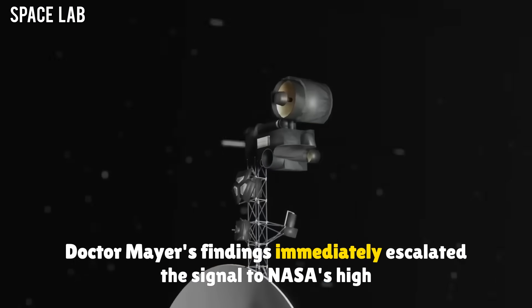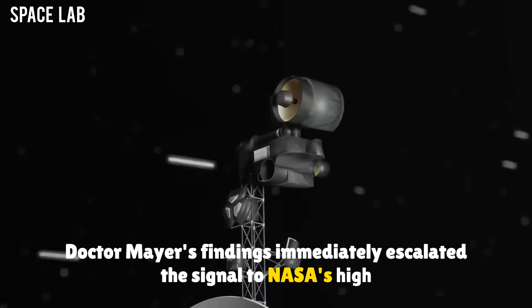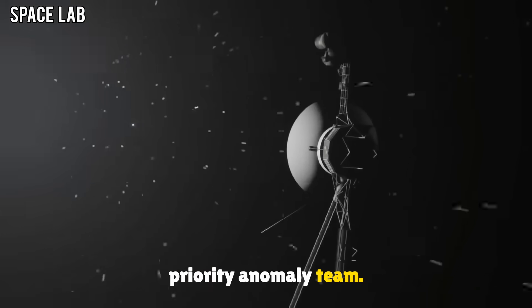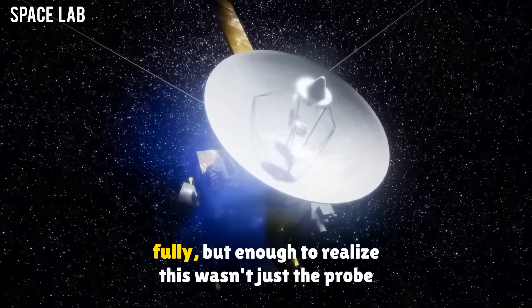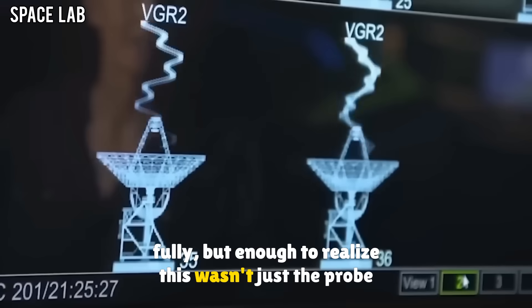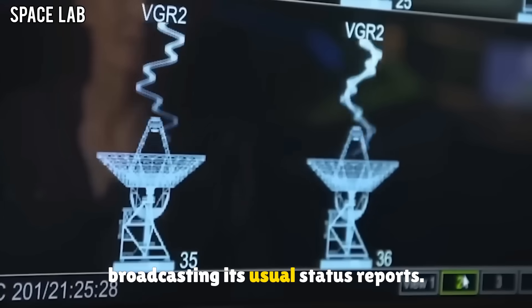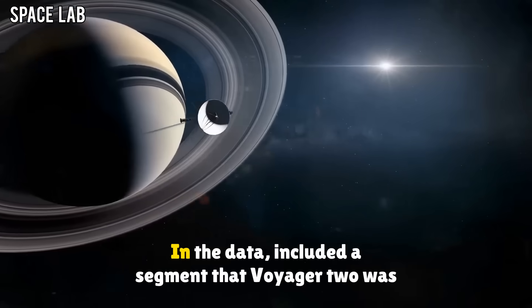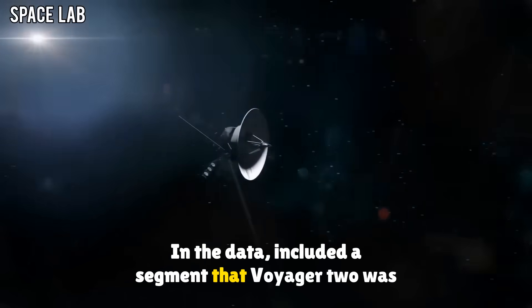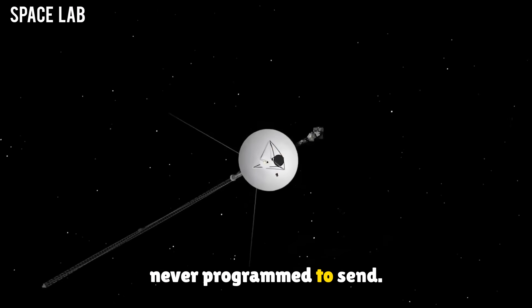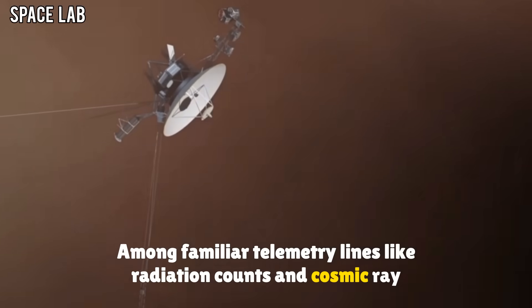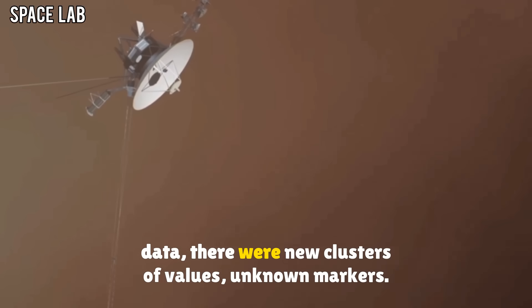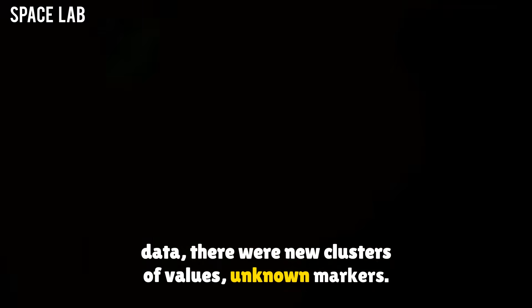Dr. Mayer's findings immediately escalated the signal to NASA's high-priority anomaly team. Within 48 hours, the signal had been decrypted, not fully, but enough to realize this wasn't just the probe broadcasting its usual status reports. In the data included a segment that Voyager 2 was never programmed to send. Among familiar telemetry lines like radiation counts and cosmic ray data, there were new clusters of values, unknown markers.